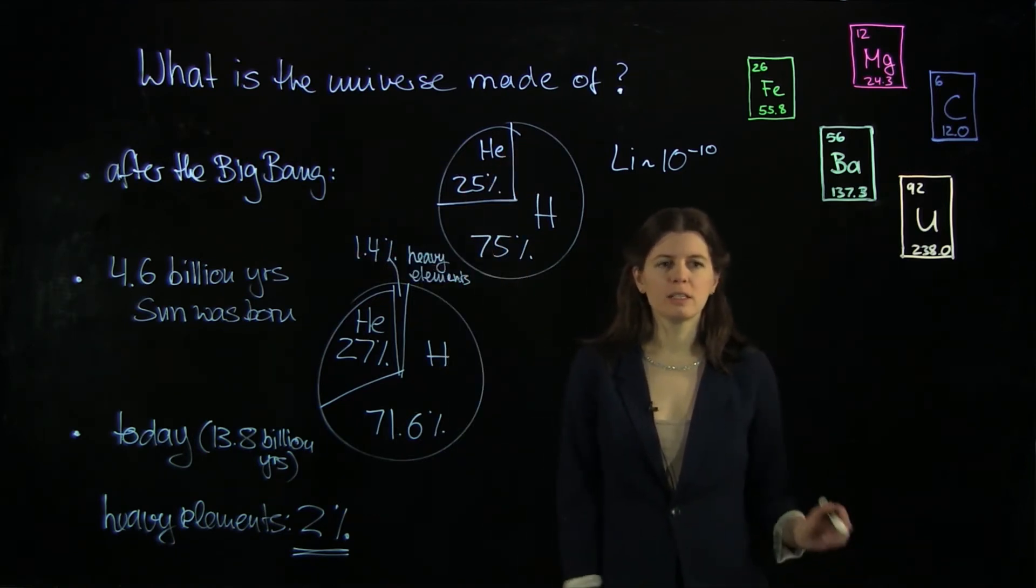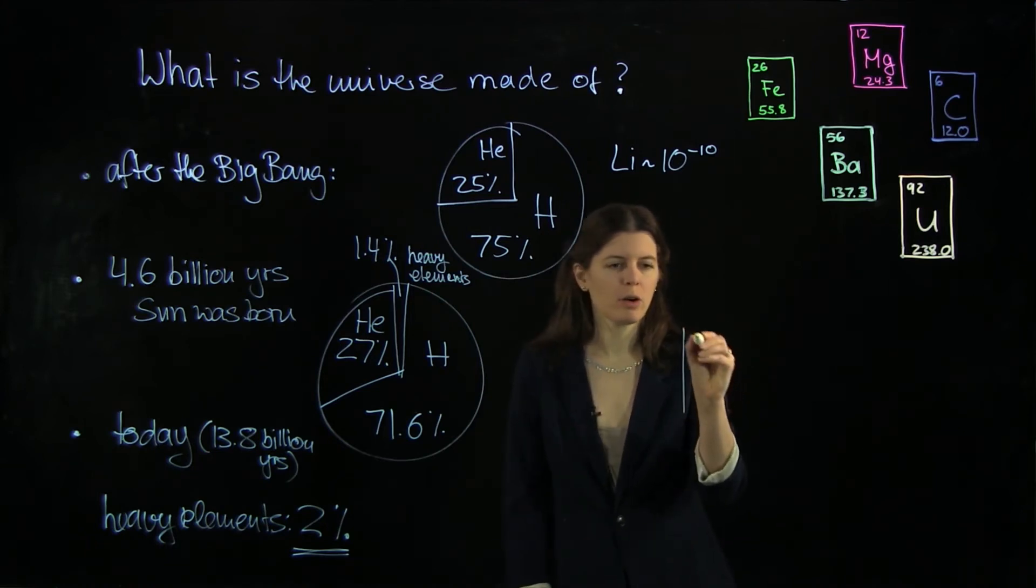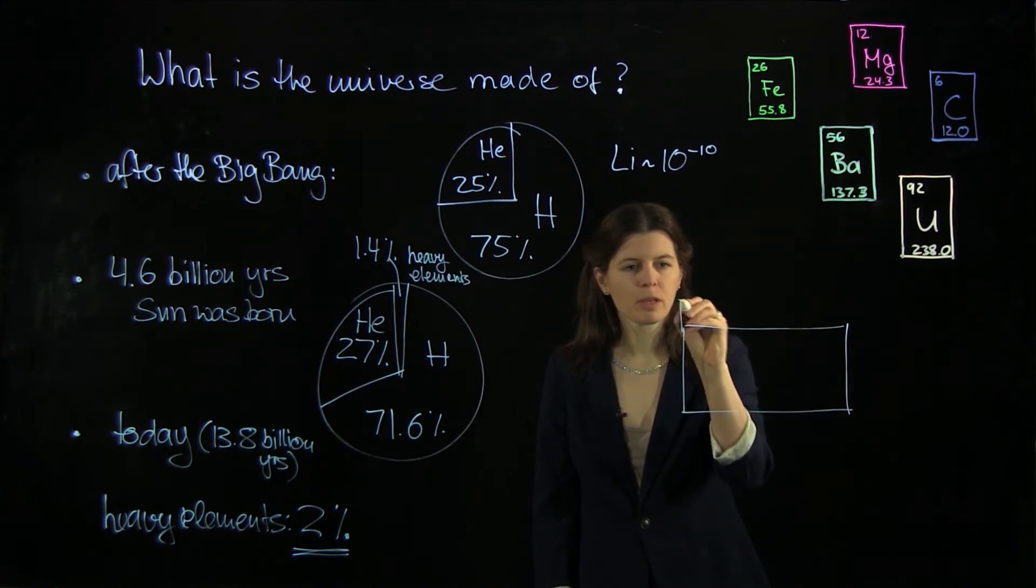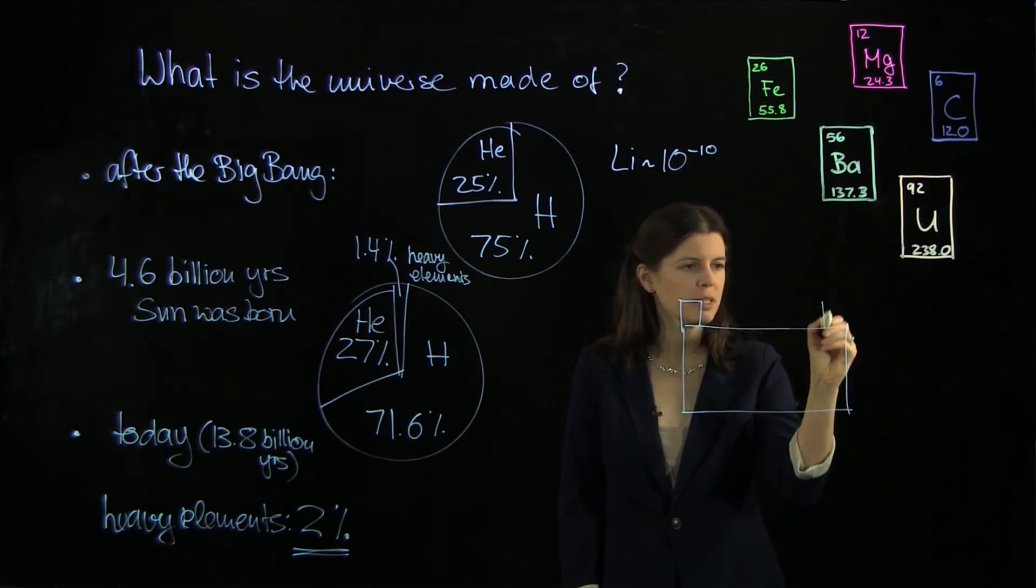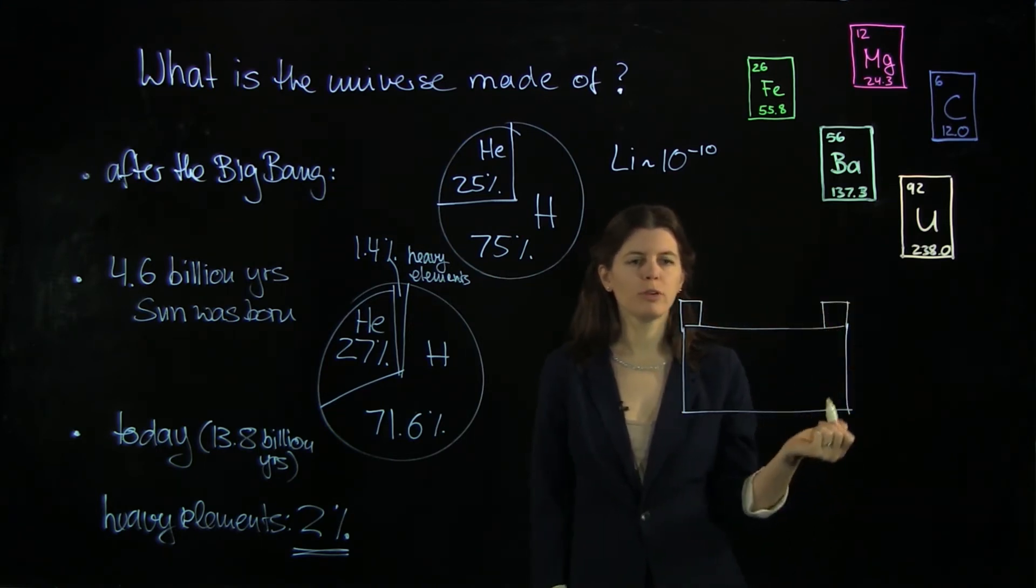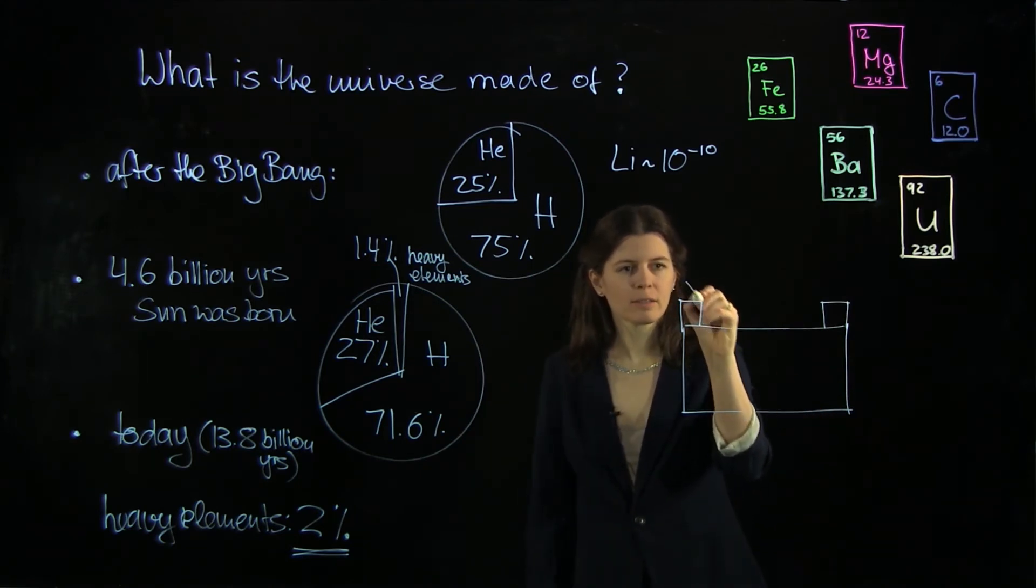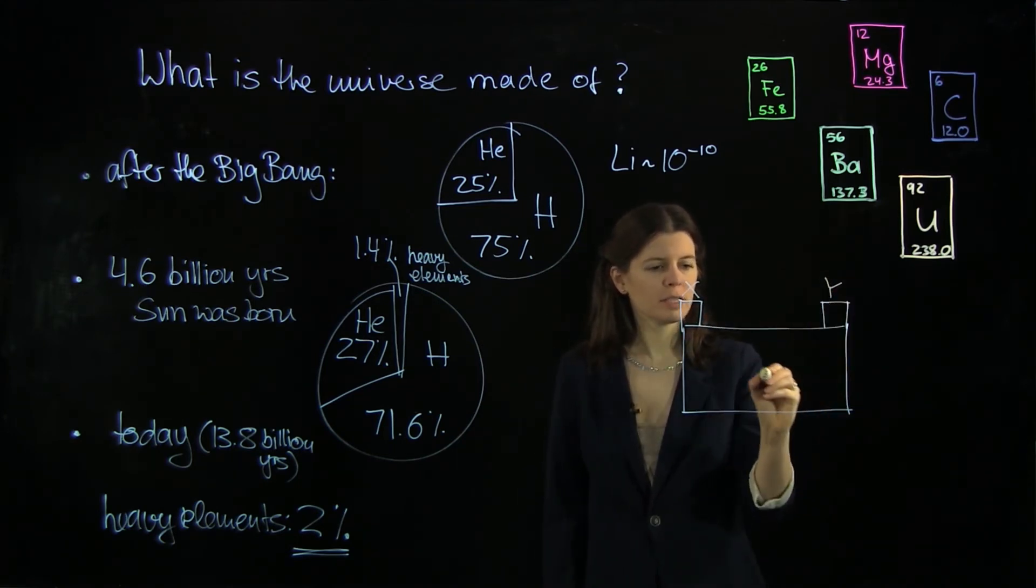And accordingly, astronomers, already quite a while ago, came up with the astronomers periodic table. That is pretty simple, actually so simple that I can draw it for you here. And it contains three things, X, Y, and Z.